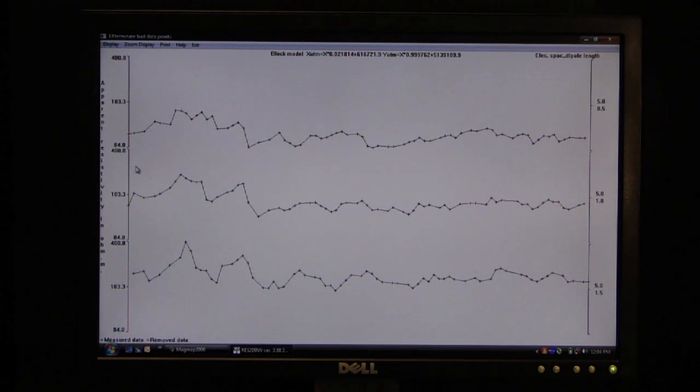This is our resistivity scale. And 5 meter is the dipole, and these are end space: 1.5, 1, and 1.5 meter. And this data looks very clean. And we have readings at every 1.25 meters along our line.